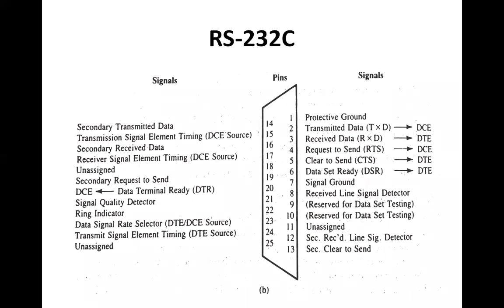Pin number two is transmitted data (TD), connected to the DTE as the serial data output line. Pin number three is received data (RD), also a serial data line on DTE. Pins two and three are used for opposite functions on data communication equipment (DCE), so they play a very important role depending on whether the device operates as DTE or DCE.